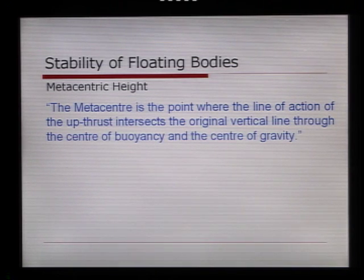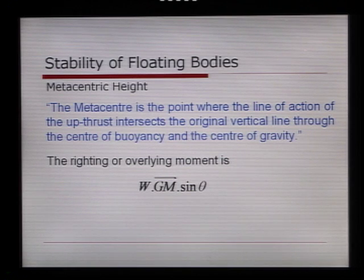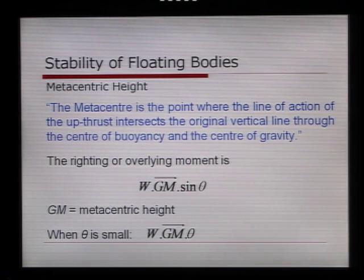A metacentric height. So, by definition, the metacentric height is the point, or the metacentre, is the point where the line of action of the upthrust intersects the original vertical line through the centre of buoyancy and the centre of gravity. Let's look at that diagrammatically. The righting, or overturning moment, is equal to W times GM, the vector distance between the centre of gravity and the metacentric height, multiplied by sine of the angle theta, where GM is the metacentric height. And if theta was small, this would equal W times GM times theta.